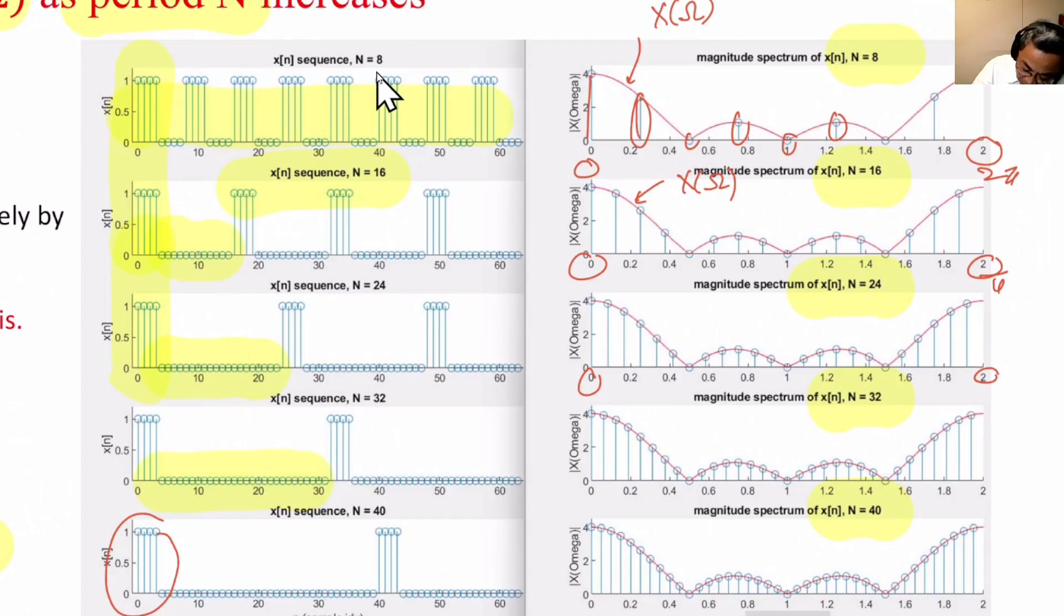So C0, C1, C2, C3, C4, C5, C6, C7. And of course, when we reach 2π is C8. When we have N equals to 16, then the number of lines doubles from 8 to 16.